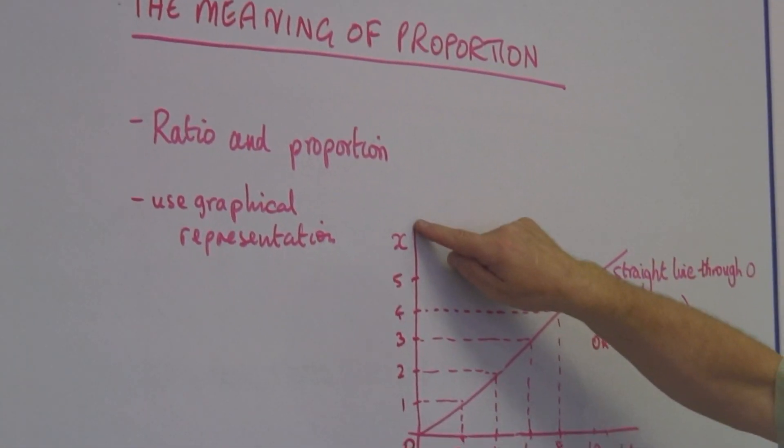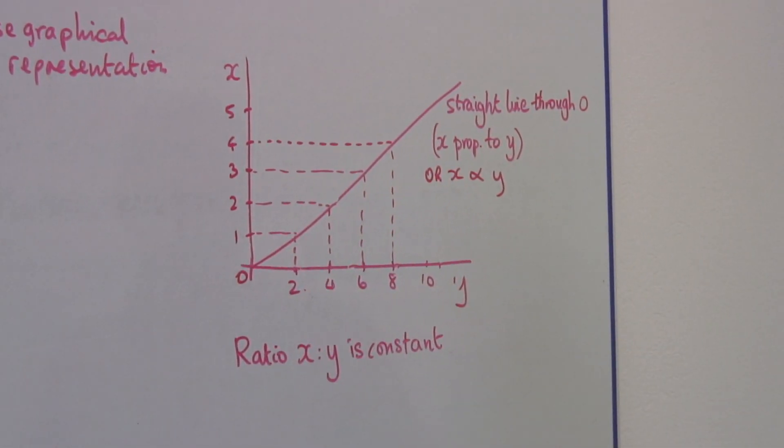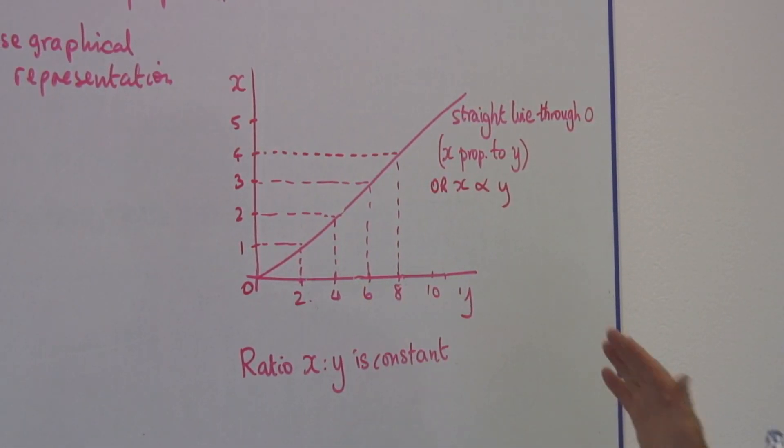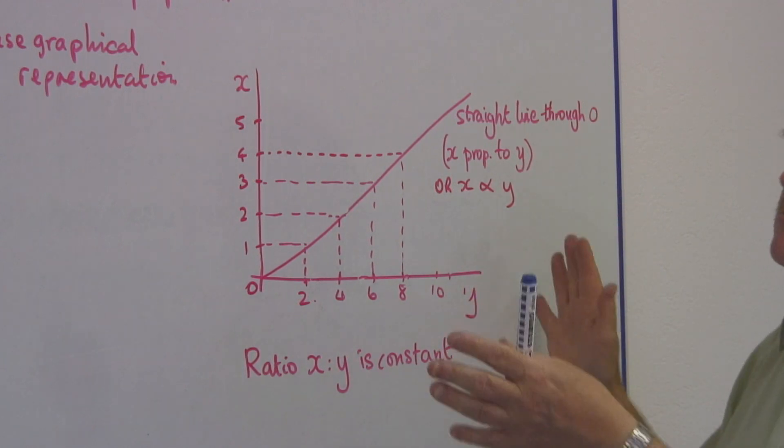Here I've got x represented on the graph vertically, and y represented horizontally. Normally we would see y vertically and x horizontally, but they are variables. It doesn't matter which is which.